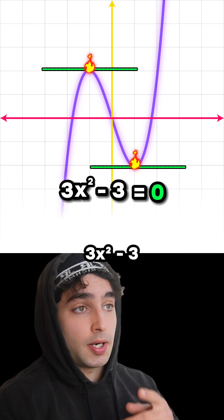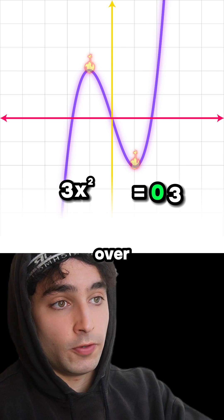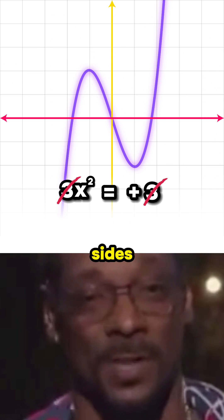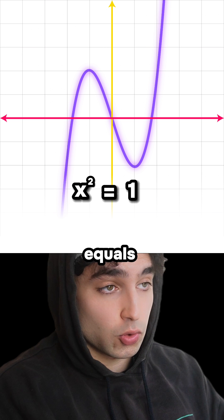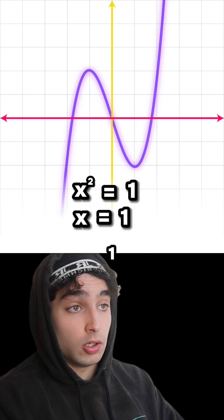So 3x squared minus 3 is zero. Move the 3 over. Now simplify this by dividing both sides by 3. x squared equals 1, so x is 1. You happy with that?